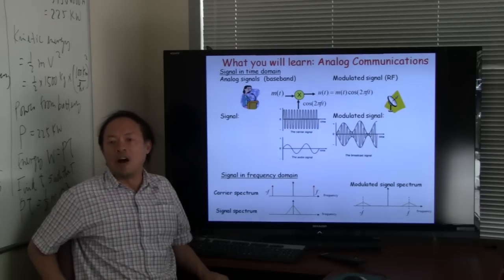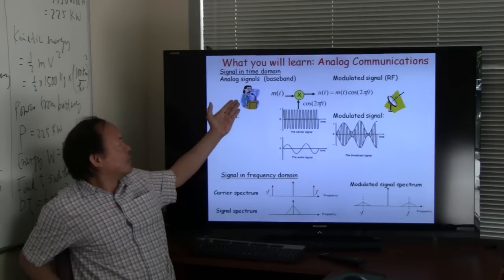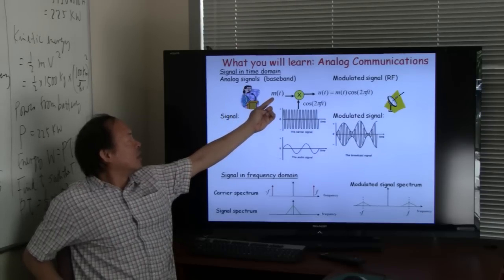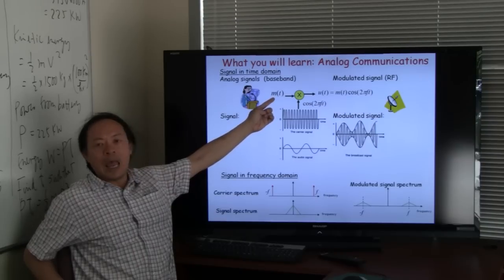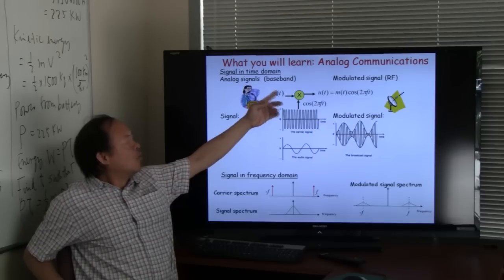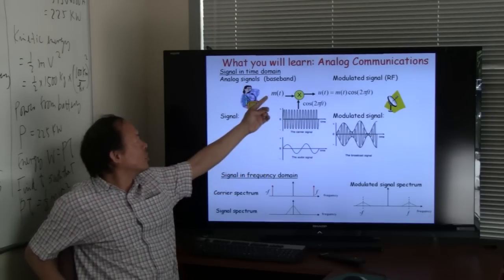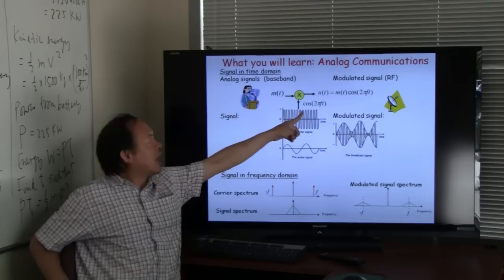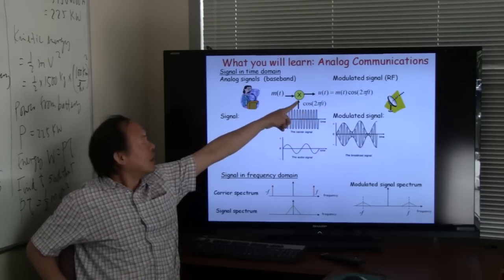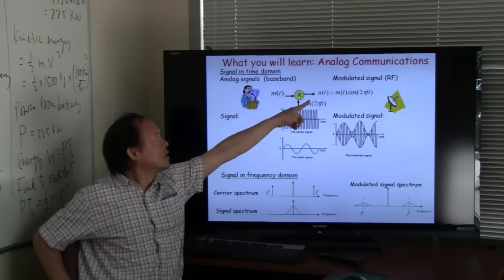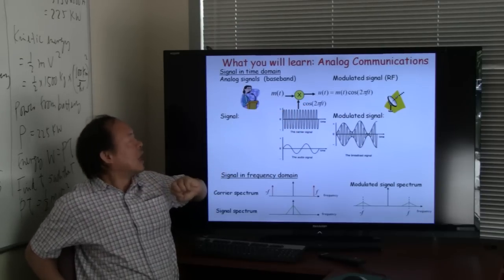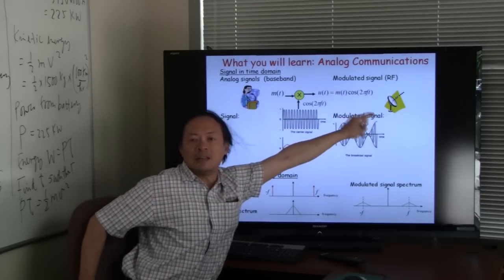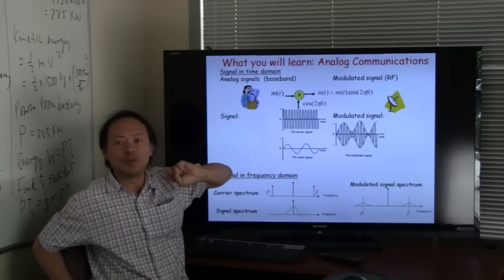The first thing you learn is analog communications. So what you have is suppose it's a person who's giving a lecture and you want to send her voice signal as M of T over the air wave. So what you're going to do is that you need to have that communication signal modulates a carrier which is cosine 2 pi Ft. An outcome would be the modulator signal U of T equal to M of T times cosine 2 pi Ft. Now this is in the radio frequency so that you can send it over the air wave by means of a transmission antenna.